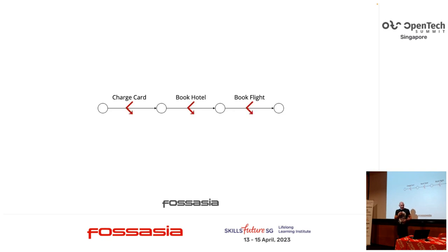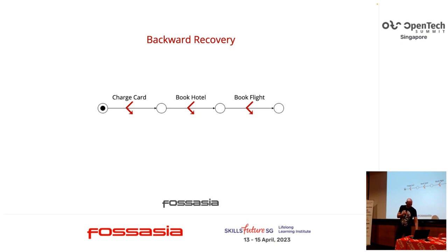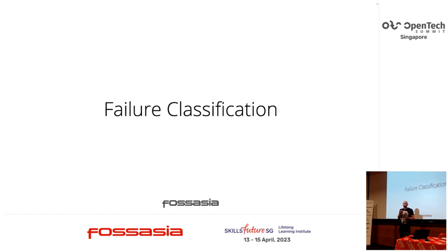In case of a failure, backward recovery rolls the process backward — more formally, we transition the system from the intermediary state back to its initial state. As a rule of thumb, we don't have to repair the underlying failure, because we're not trying to push past it. Backward recovery is a very common application-level failure mitigation strategy: we compensate — we undo what we already did, we reverse the charge on the credit card.